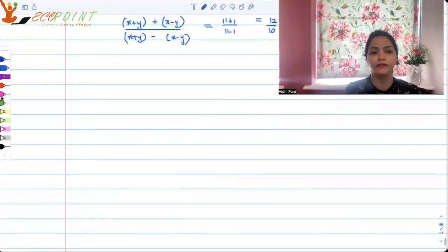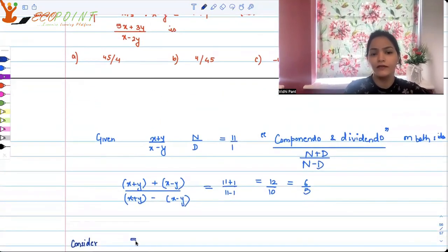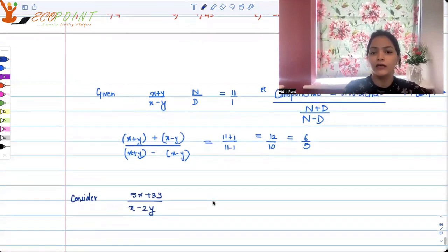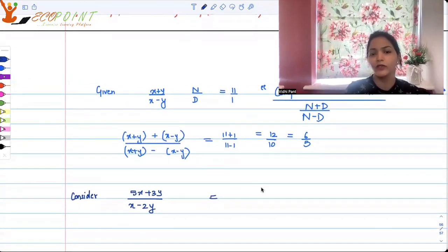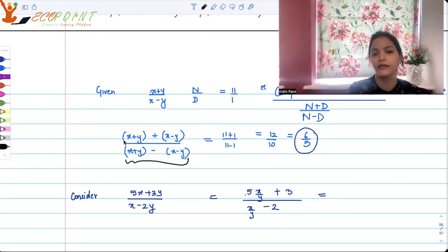Now what we have to find out is another ratio, which is 5x plus 3y upon x minus 2y. Now use the same method as in the previous question, you can take y in common or basically divide throughout by y. So that gives you 5x by y plus 3 upon x by y minus 2. So this is same as this. So here we can just make use of this 6 by 5. How will I make use of this 6 by 5? Now what I have not done yet is, I have not simplified this. Now you simplify it.